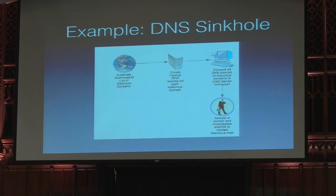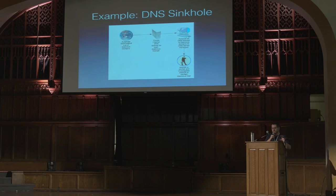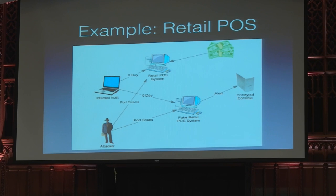I also have a couple of examples here of things I've built using DevOps methodologies. One of them is a DNS sinkhole. There's a lot of open source intelligence out there that every organization should try to leverage — specifically the list of malicious domains that are available. If you create internal DNS records for all these known malicious domains, you can forward all DNS lookups for those domains to a DNS honeypot server. By doing so, your analysts are able to find out who is actually going to those malicious sites.